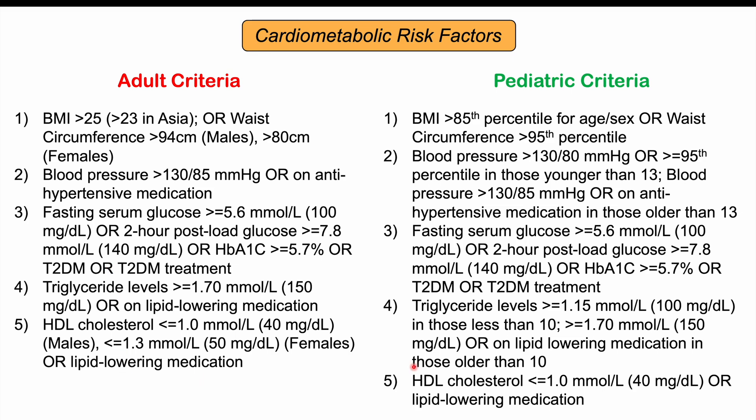The pediatric criteria applies to individuals under age 18 and is very similar to the adult criteria, though some numbers differ. The new diagnostic criteria requires at least one of these cardiometabolic risk factors to make the diagnosis of several of the liver conditions we're discussing here.